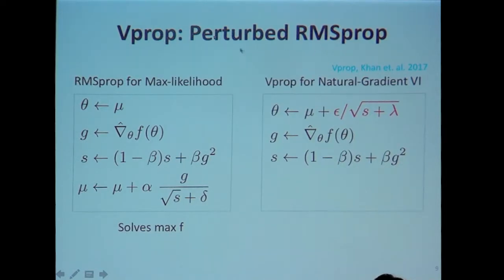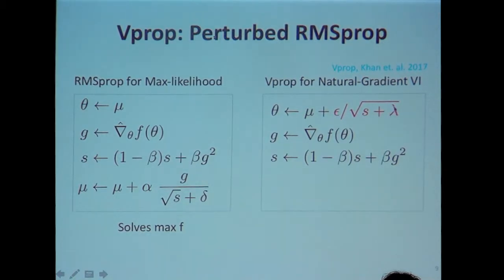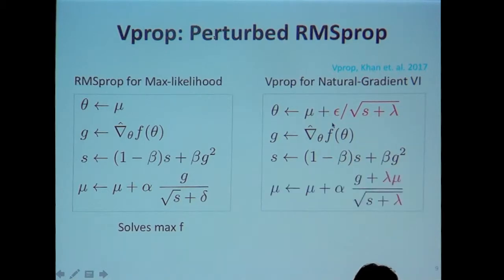The first method in the sequence I'll present is a perturbed RMSProp method trying to do natural gradient variational inference — natural gradient descent for the variational objective. We call it V-Prop. The first three lines of the code are almost identical to RMSProp: I sample epsilon from a standard normal distribution, scale it with the scaling matrix, and add a precision parameter corresponding to the Gaussian prior. Once I do this, I take a step to update only the mean parameter.